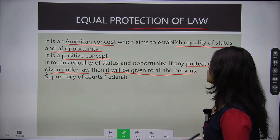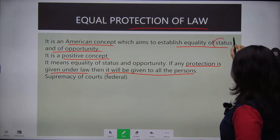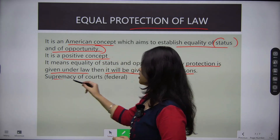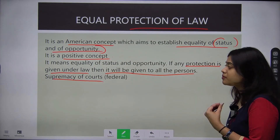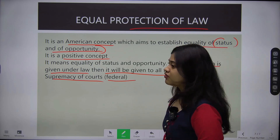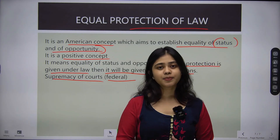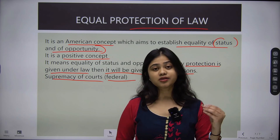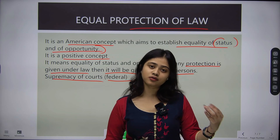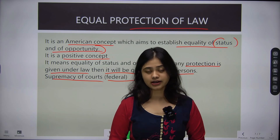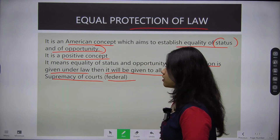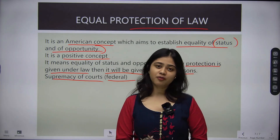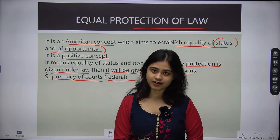Equal protection of law is given on two grounds: equality of status and equality of opportunity. It is an American concept where supremacy of courts and a federal form of government are followed. Just as in Britain the type of government and society affects its laws, in America the federal form of government and its society shape the concept of equal protection of law.